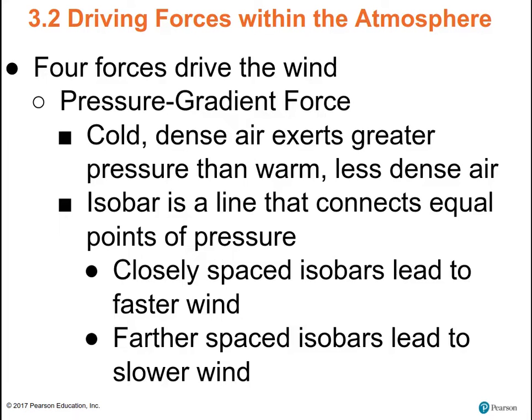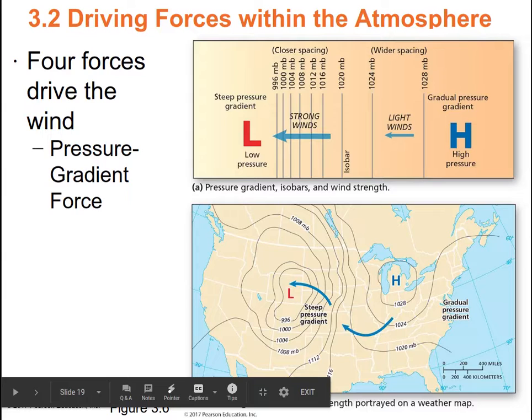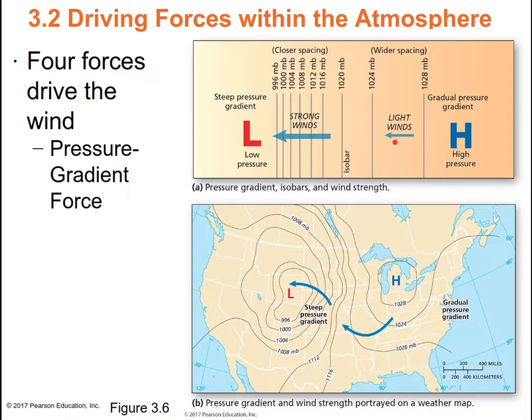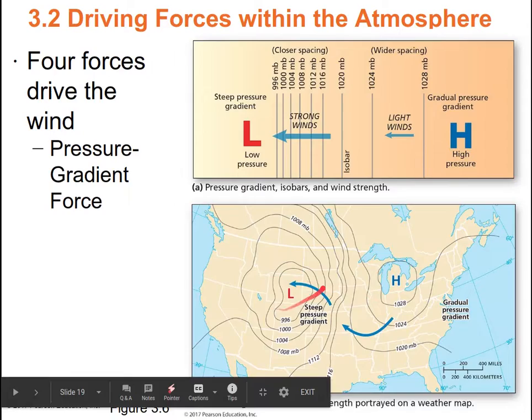Here's a diagram out of the textbook. You can see over here there's light winds where the isobars are far apart. Over here there's strong winds because the isobars are much closer together. So on a weather map, this region would have lower winds and this region would have higher winds.